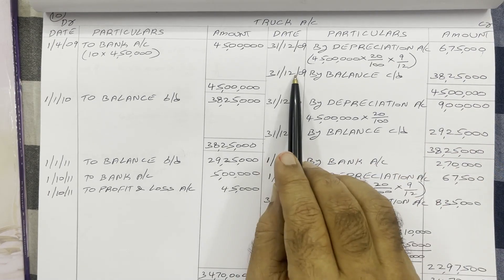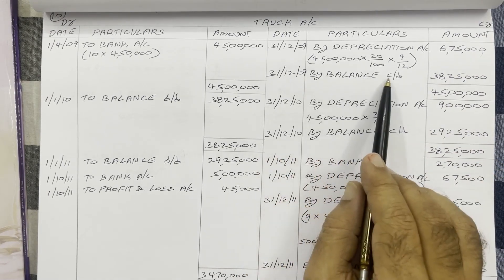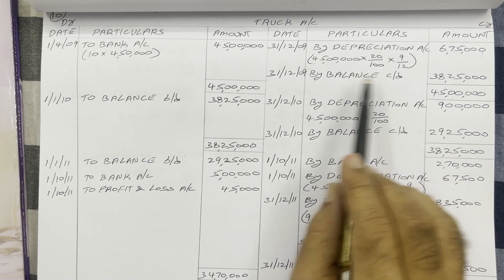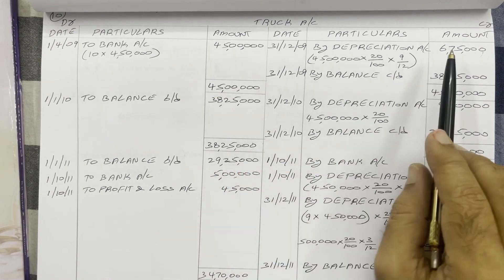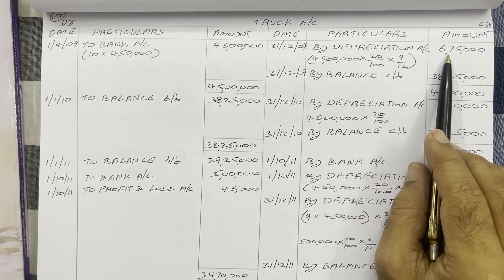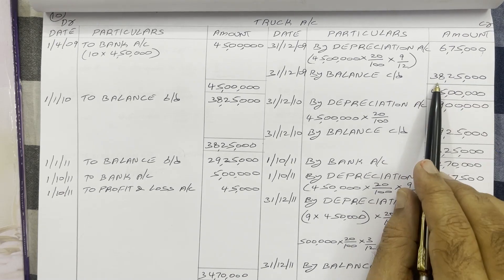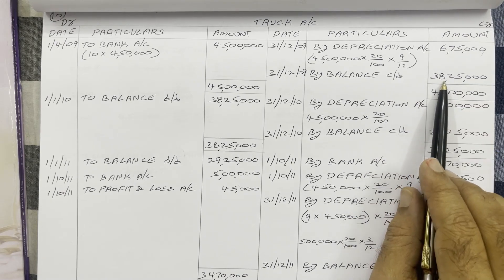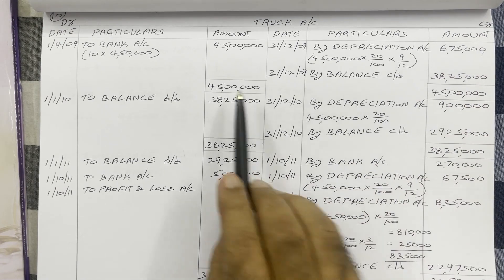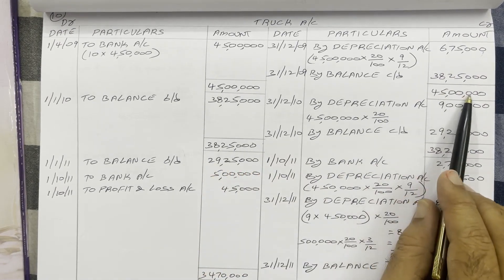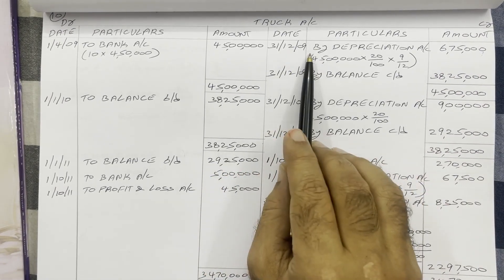Next, we have to calculate balance carried down. Debit total Rs 45 lakh minus credit depreciation Rs 6,75,000 equals Rs 38,25,000. Two sides highest total is Rs 45 lakh. So 2009 is completed.